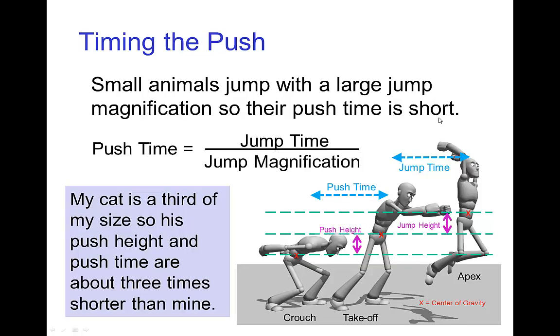The timing of pushing off in a jump is also affected by scale. For small animals, since they have a large jump magnification, the push time—the time that they're pushing off on the ground in order to jump—is shorter.